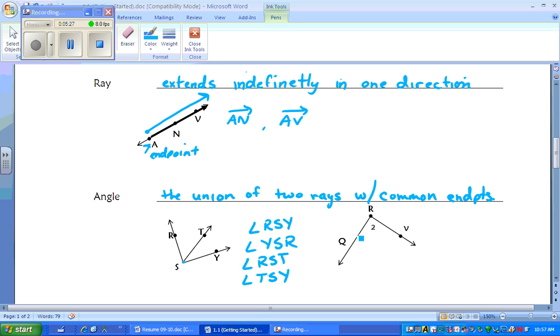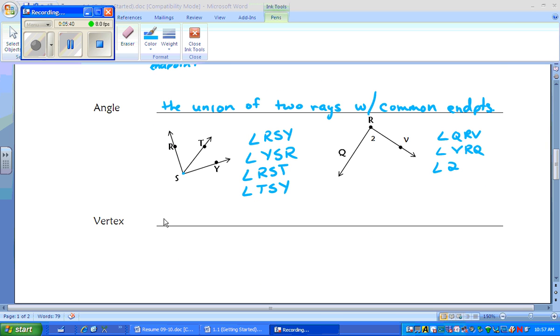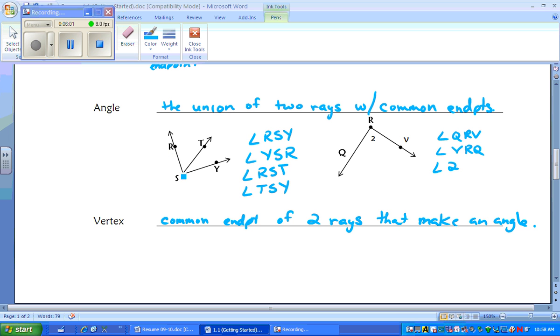Over here you can name it as angle QRV or angle VRQ or even angle 2, because 2 is in the center of that angle. The vertex point is the common endpoint of two rays that make an angle. So S would be the vertex point, or over here R would be the vertex point, either way you look at it.